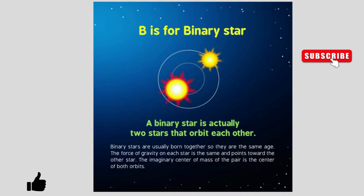B is for binary star. A binary star is actually two stars that orbit each other. Binary stars are usually born together so they are the same age. The force of gravity on each star is the same and points towards the other star. The imaginary center of mass of the pair is the center of both orbits.